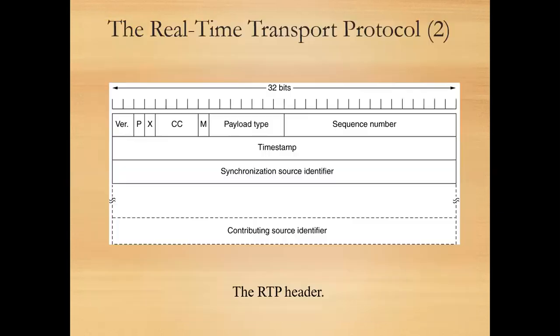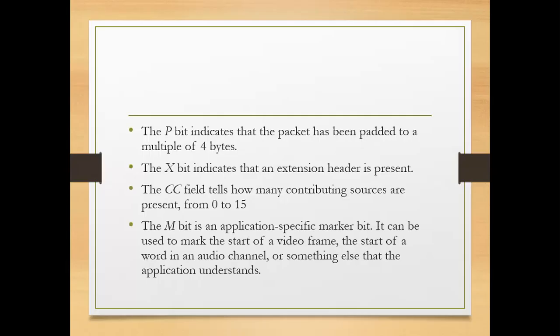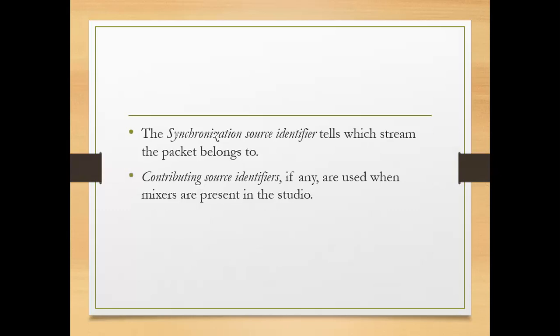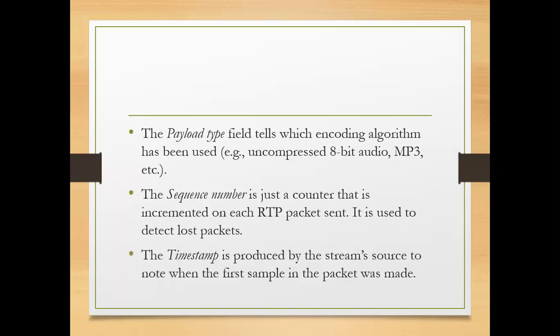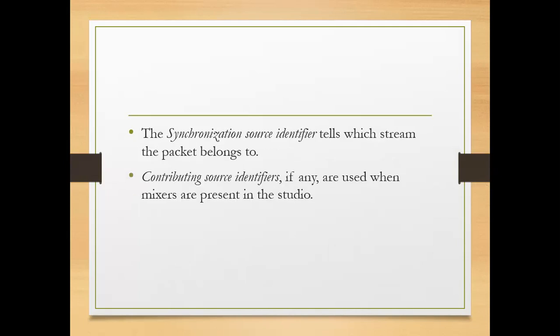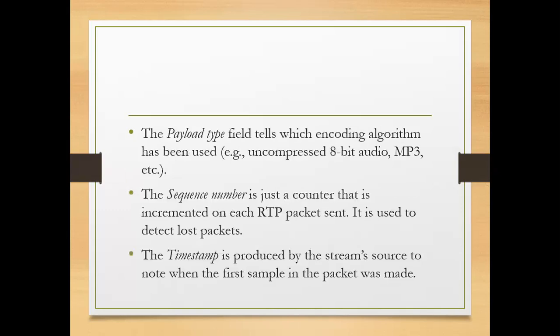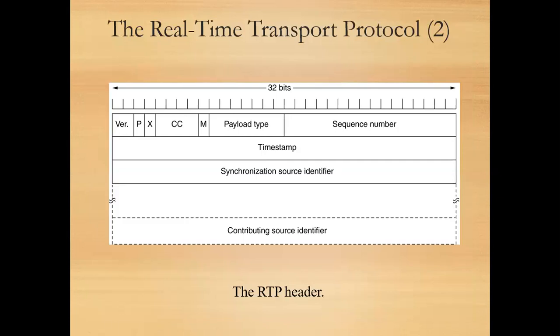Next is Timestamp, which is a 32-bit field. The timestamp is produced by the stream source to note when the first sample in the packet was made. Another field is the Synchronization Source Identifier, which tells which stream the packet belongs to. And the last one is the Contributing Source Identifier, used when mixers are present in the studio.